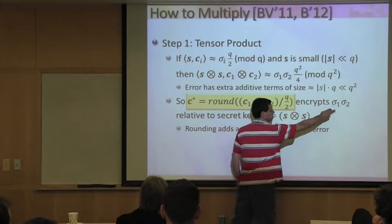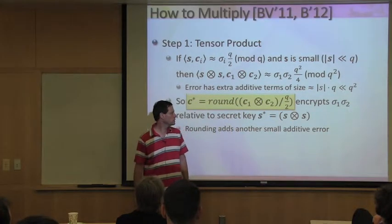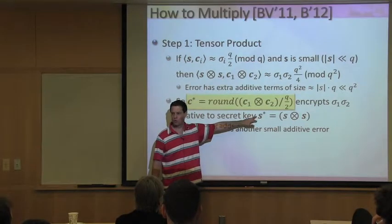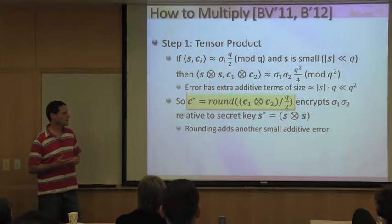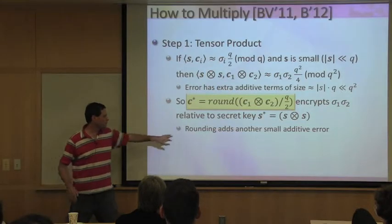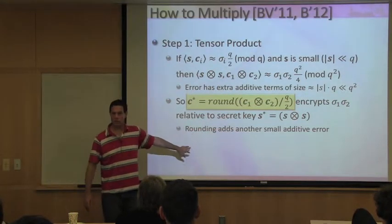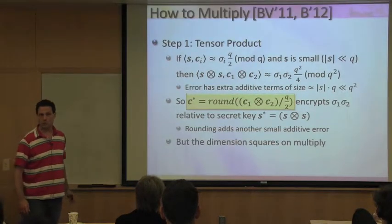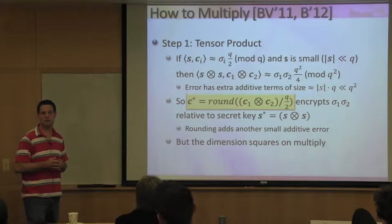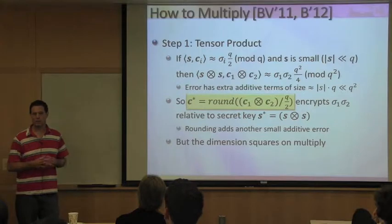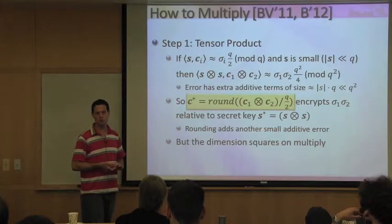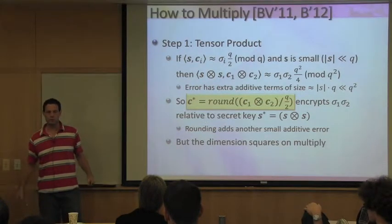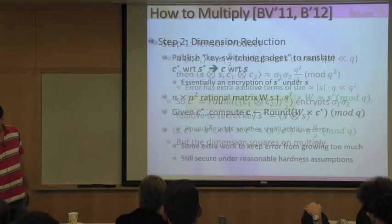There's an issue: the resulting ciphertext is relative to the wrong key — not the original key, but a new key obtained by the tensor product of the initial key with itself. The dimension is also a problem: I started with vectors of n coordinates, but after a single multiplication I have vectors of n^2 coordinates. After two multiplications it's n^4, then n^8, and I can't do this more than a constant number of times before the dimension explodes.